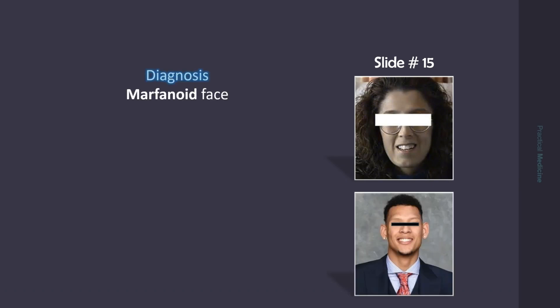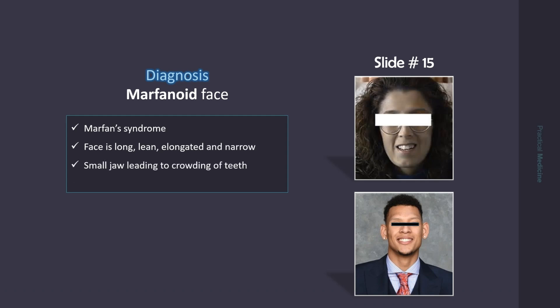This is Marfan facies in Marfan syndrome. The face is long, lean, and elongated. There is a small jaw, leading to crowding of teeth. The palate is high-arched.